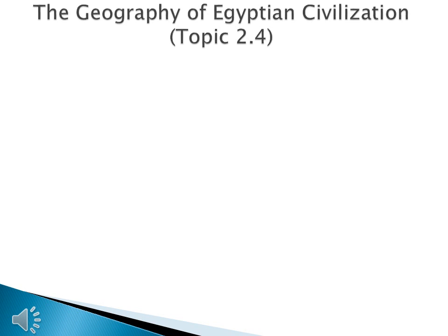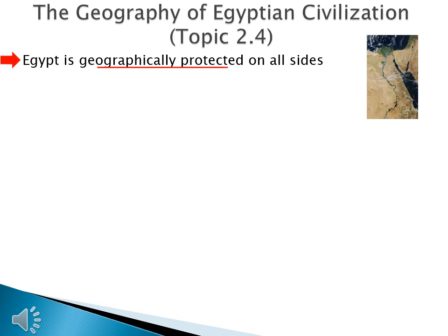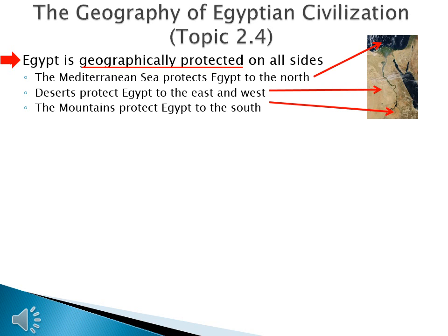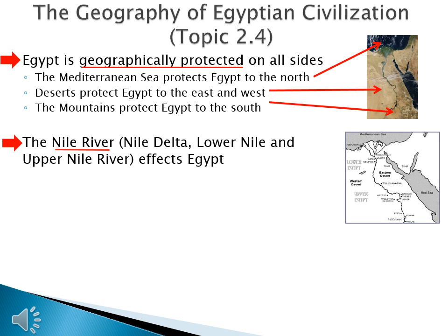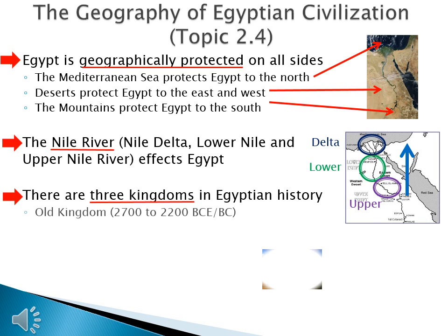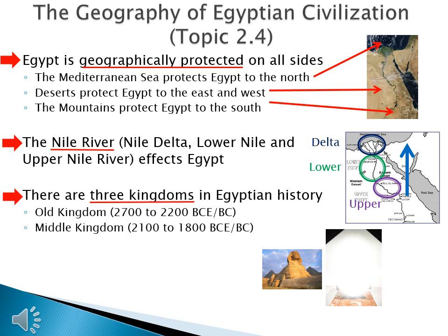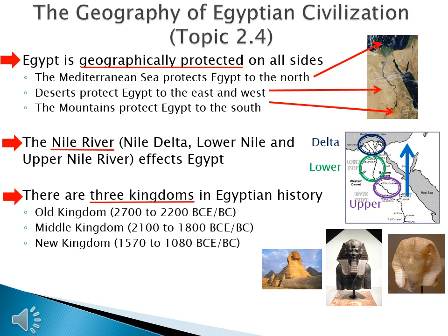Once we learned about the civilizations in Mesopotamia, we moved on to Egypt. We looked at the geography of Egyptian civilization, Topic 2.4. Egypt is geographically protected on all sides: the Mediterranean Sea to the north, deserts to the east and west, and mountains to the south — making it very hard to invade, unlike Mesopotamia. We also learned about the Nile River, the Nile Delta, the Lower Nile, and the Upper Nile, and how it affects Egypt. Remember, the Nile River flows from south to north. There are three kingdoms in Egyptian history: the Old Kingdom (2700–2200 BCE), the Middle Kingdom (2100–1800 BCE), and the New Kingdom (1570–1080 BCE). Ancient Egypt ends in 330 BCE, again related to Alexander the Great.